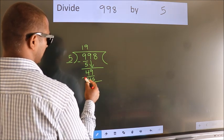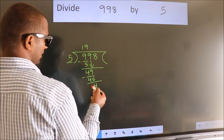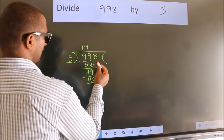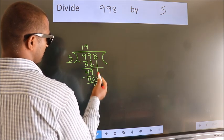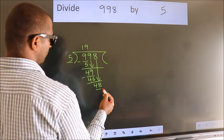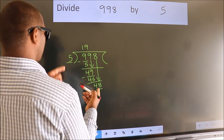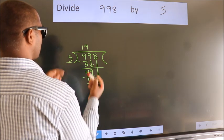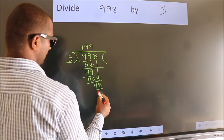Now, we subtract. We get 4. After this, bring down the beside number. 8 down, making 48. A number close to 48 in 5 table is 5 nines 45.